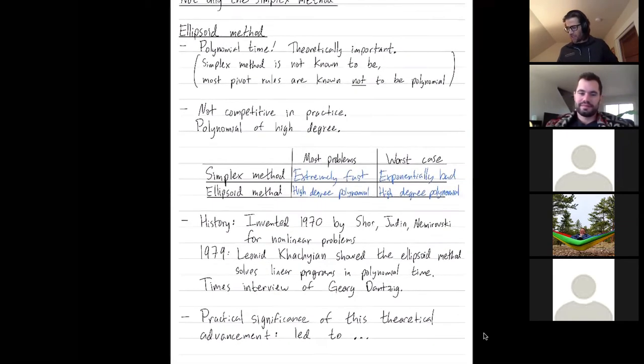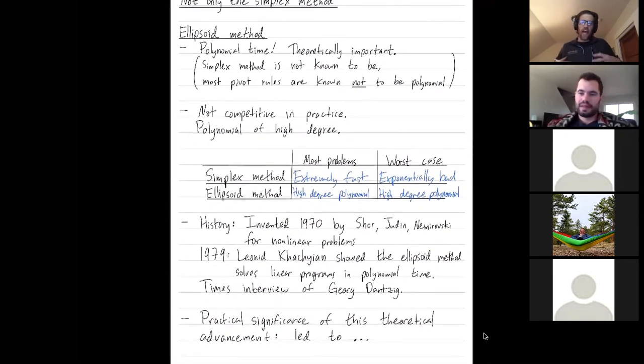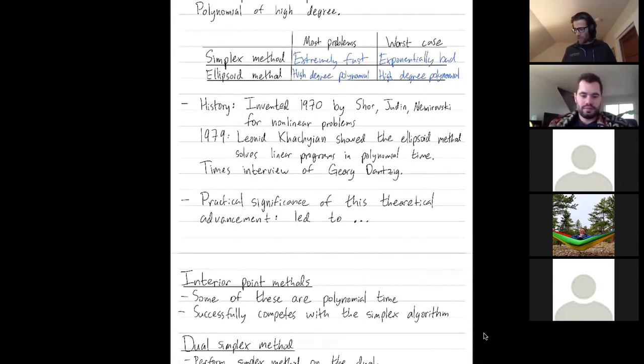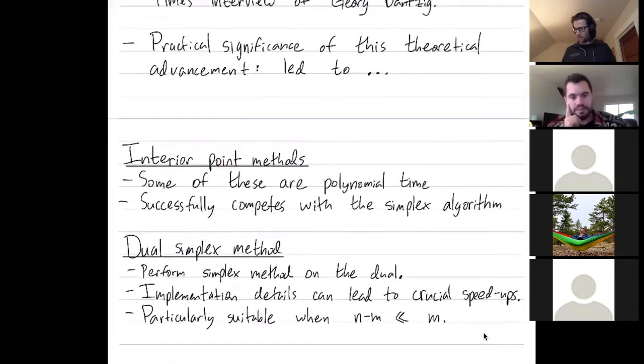I should say, though, that the ellipsoid method has been significant practically because it's led to advancements of other algorithms that are both provably good in the worst case, polynomial in the worst case, and also very fast practically. In particular, interior point methods, which we'll talk about.